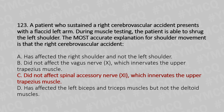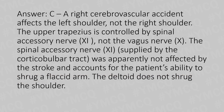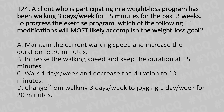A cerebrovascular accident affects the left shoulder, not the right. The upper trapezius is controlled by the spinal accessory nerve, not the vagus nerve. The spinal accessory nerve was apparently not affected by the stroke, which accounts for the patient's ability to shrug the flaccid arm. The deltoid does not shrug the shoulder. Now let's move to question number 124: a client participating in a weight loss program has been walking three days per week for 15 minutes for the past three weeks.